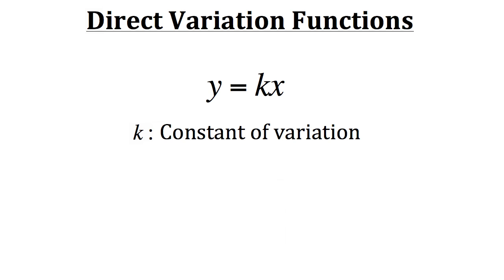To find the constant of variation k, you use a similar procedure to finding a slope, except for direct variation functions you only need to know one point. If you know an input and its corresponding output, you can find k by taking your output y and dividing it by x — rather than doing y2 minus y1 over x2 minus x1. Just one point: y over x gives you your variation constant.